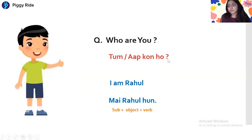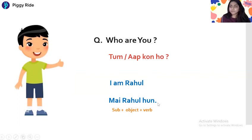So: Tum Kaun ho or Aap Kaun ho. The reply would be 'I am Rahul' — in Hindi, Main Rahul hoon. Main Rahul hoon. The structure is subject, object, verb: Main Rahul hoon.